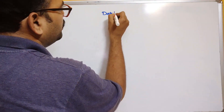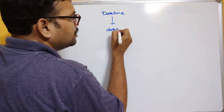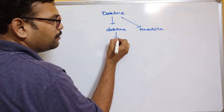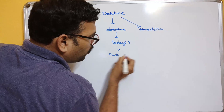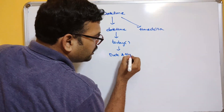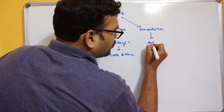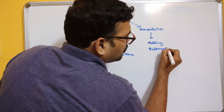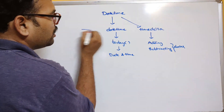In order to print date and time, we need to work with the module called the datetime module. Inside this datetime module we have the datetime class as well as the timedelta class. The datetime class has a method called today() which gives the date and time of today, and timedelta is used for adding or subtracting dates.